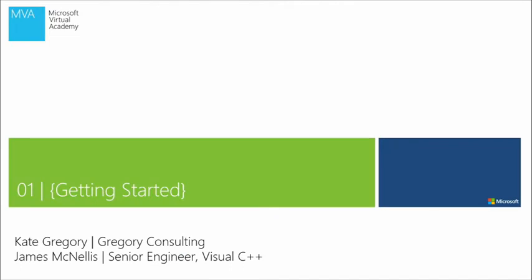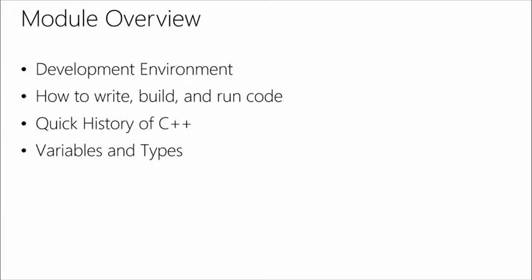So our first module — we just wanted to get you started. What tool do I use? How do I write code? What the heck is C++ and why is it like this? And then to actually start into some of the fundamentals, the sort of cornerstones of how the language works and being a strongly typed language. We're going to use Visual Studio 2013 Ultimate. The commands and the menus are the same for Visual Studio Ultimate and for Visual Studio Express.